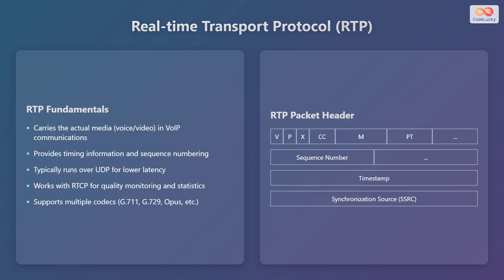RTP supports multiple codecs, such as G.711, G.729, and Opus, which compress and decompress the audio and video data. The RTP packet header includes key fields: version, padding, extension, contributing source identifiers count, marker, payload type, sequence number, timestamp, and synchronization source. These fields are essential for managing the real-time transmission of voice and video data.